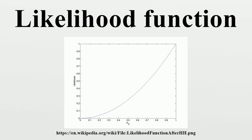Likelihood for continuous distributions: the use of the probability density instead of a probability in specifying the likelihood function may be justified simply. Suppose that, instead of an exact observation x, the observation is a value in a short interval with length delta j, where subscripts refer to a predefined set of intervals. The probability of getting this observation is approximately where x* can be any point in interval j. Recalling that the likelihood function is defined up to a multiplicative constant, it is valid to say that the likelihood function is approximately this expression, and considering the lengths of the intervals decreasing to zero yields the result.